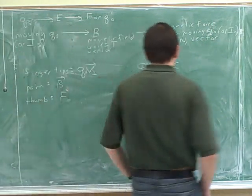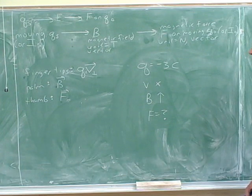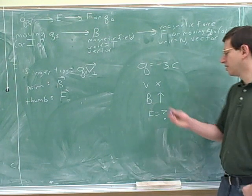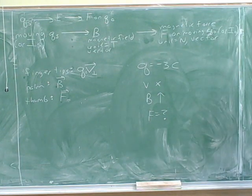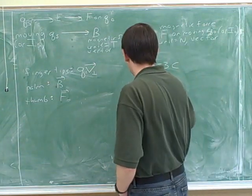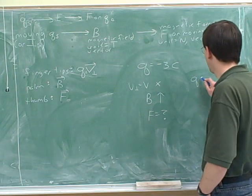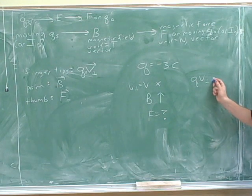Another problem — let's go through the same steps as before. When v is pointing up and B is going into the board, v is perpendicular to B since B is going into the board, which is perpendicular to something in the plane of the board. So v-perpendicular equals v. That means v-perpendicular times q is coming out of the board. The symbol for that is a dot.